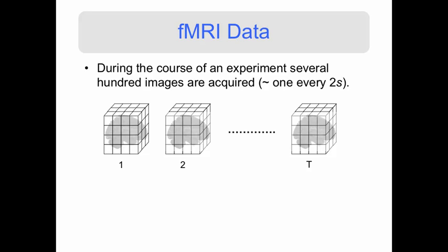100,000 measurements taken at time 2, and so on, all the way up to time T. Basically, we're going to have 100,000 measurements taken several hundred times with a temporal resolution of about two seconds.